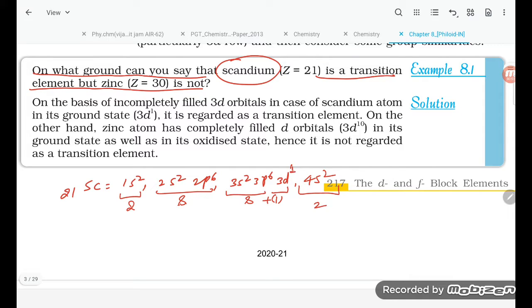Now if you are talking about zinc, zinc is 30, so configuration is 1s² 2s² 2p⁶, here is 3s² 3p⁶ 3d¹⁰ and 4s². So it is fully filled.